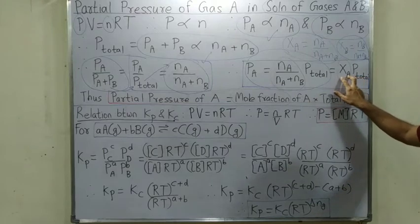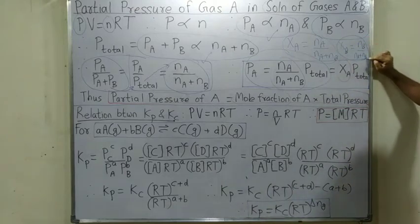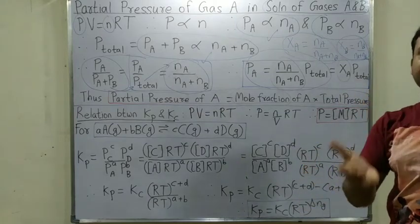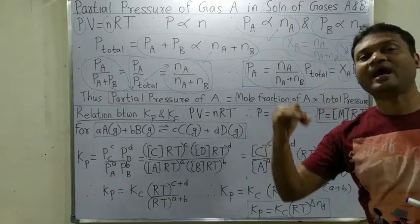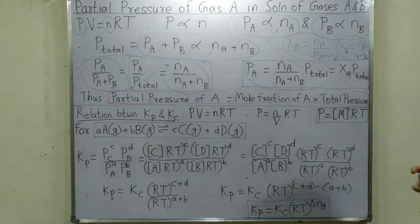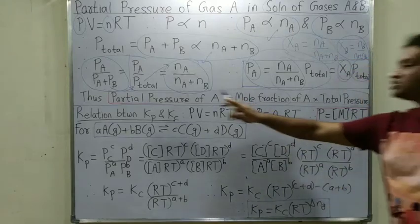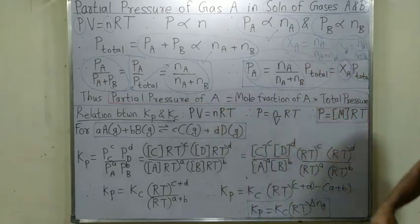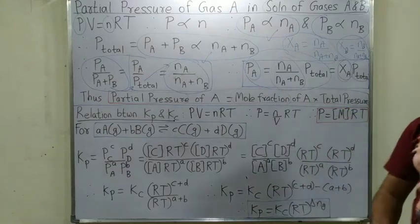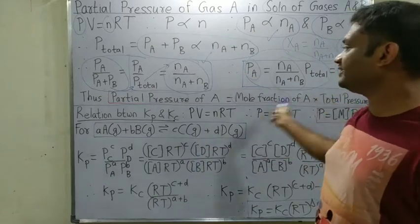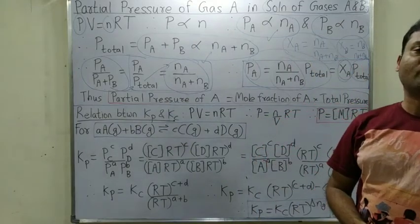So na / (na + nb) is the mole fraction of A, written as Xa. Thus, partial pressure of A = Xa × P_total. Similarly, mole fraction of B is Xb = nb / (na + nb), and Xa + Xb = 1. We have successfully derived: partial pressure of A is mole fraction of A into total pressure, and partial pressure of B is mole fraction of B into total pressure.